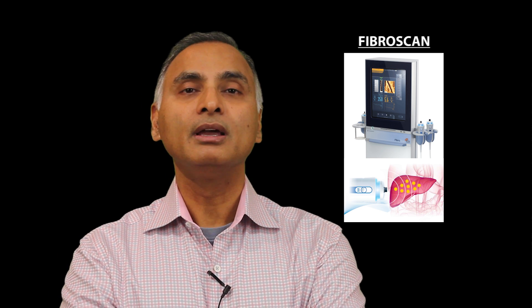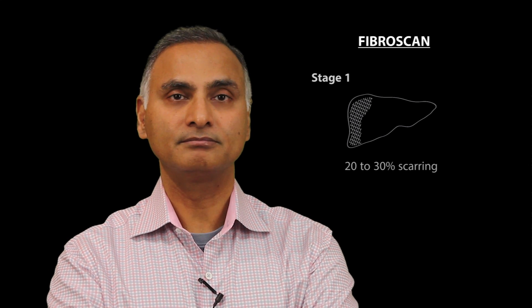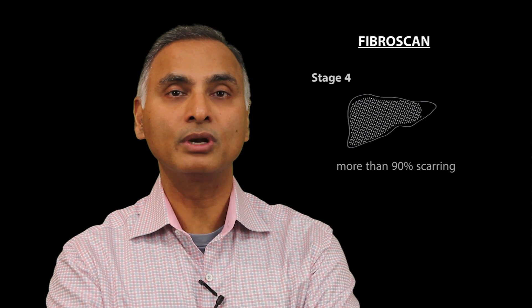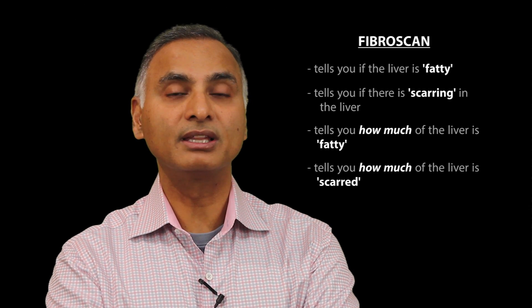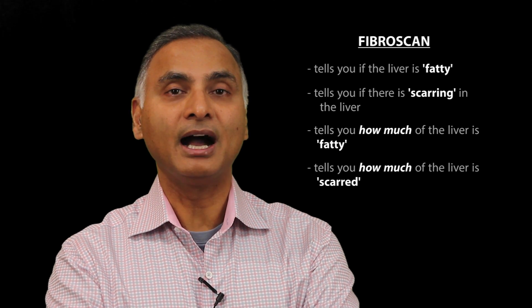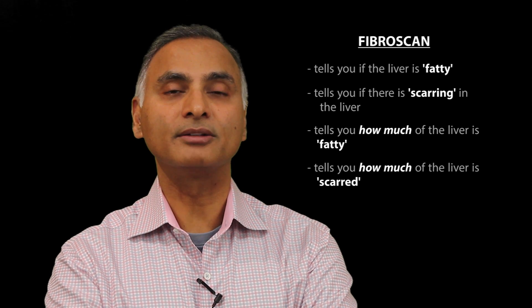For example, if you are stage one, it's 20 to 30 to 40% scarring of the liver. If you are stage two, 50% of the liver is scarred. If you are stage four, more than 90% of the liver is scarred. So wouldn't you want to find out: A, if you have fatty liver or not; two, if there is scarring in the liver or not; and three, how much of the liver is fatty and what percentage of the liver is scarred?